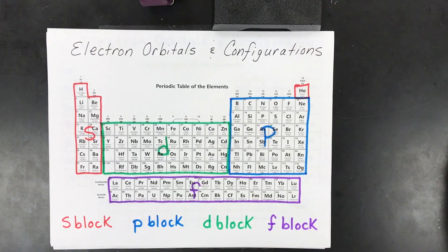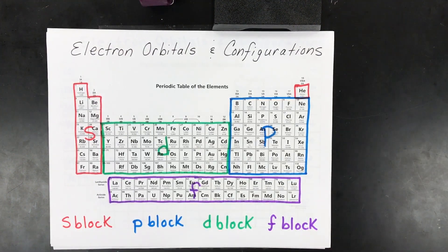So what I'm going to do in this video is teach you how to do electron configurations, orbital diagrams, and count valence and do Lewis dot structures for those elements.